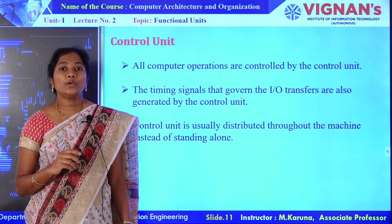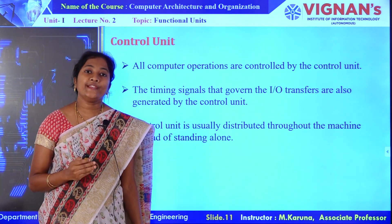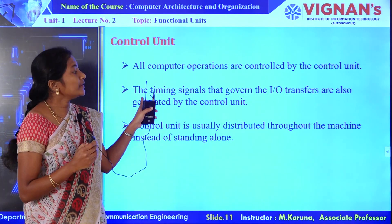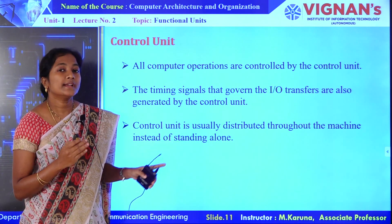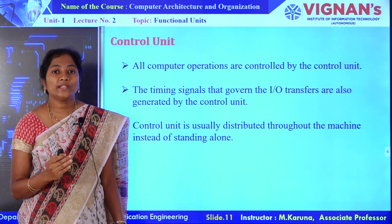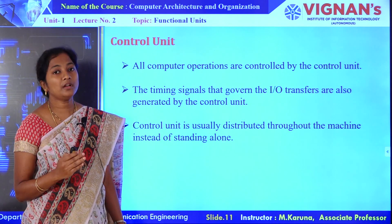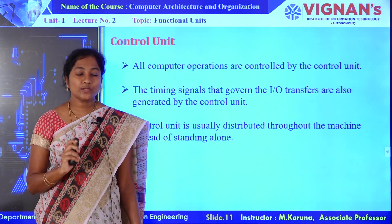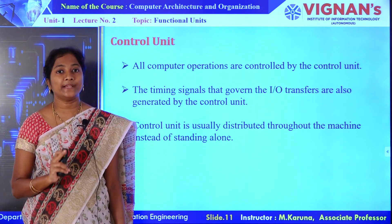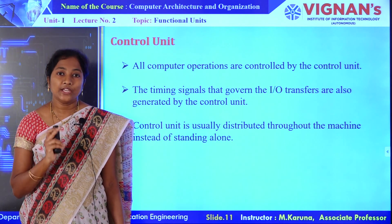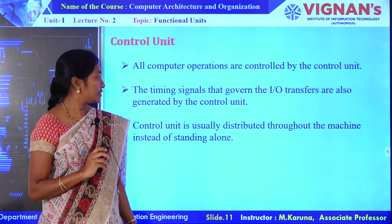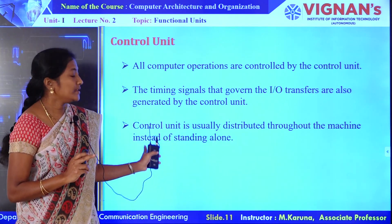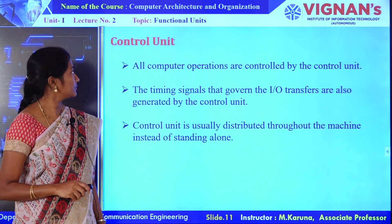Coming to the control unit. The control unit generates timing signals as well as control signals. These control signals or timing signals govern all IO transfers within the computer or between the computer and IO devices. All the activities of functional units will be coordinated by the control signals issued by the control unit. The control unit is usually distributed throughout the machine instead of standing alone.